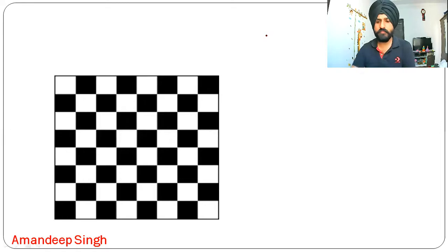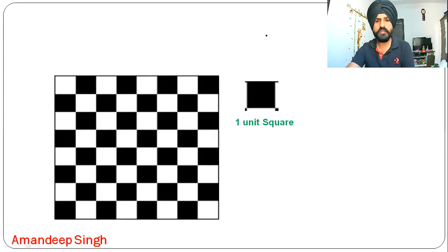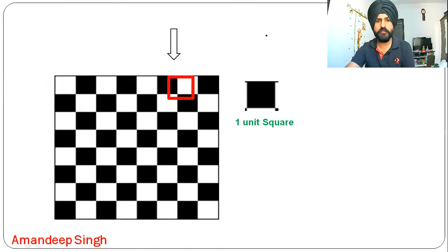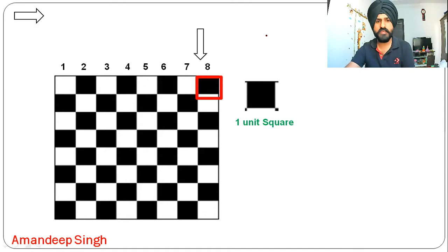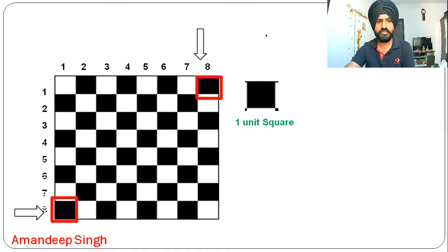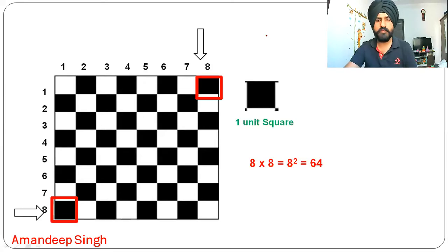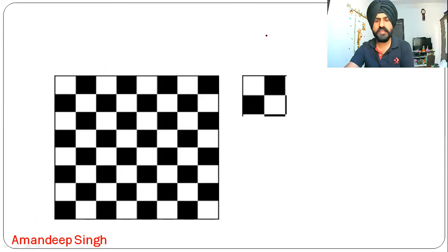Here is a chessboard. The smallest possible square is the one unit square — it has length and breadth of one. When you go from left to right, you find eight such squares, and from top to bottom, eight such rows. So eight columns and eight rows gives eight times eight, which is 64 such squares. That's the basic count everyone knows.